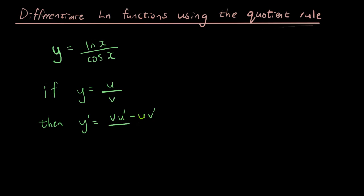You can see that this fraction matches what we have because it's a function on the top, the ln function, and the cosine function on the bottom. So we're going to let u equal ln x because u is the term at the top, and v equals cosine x.